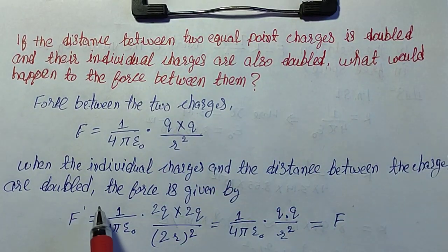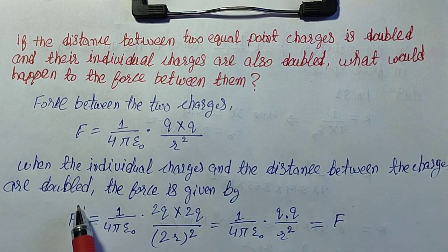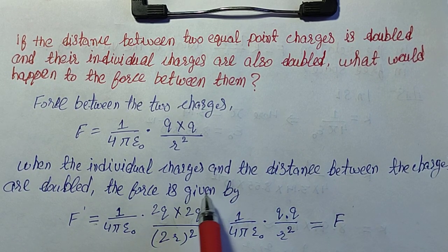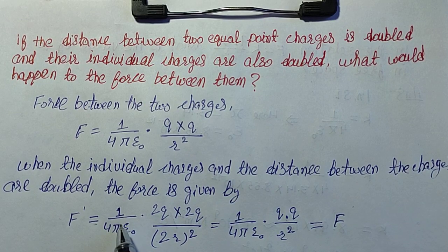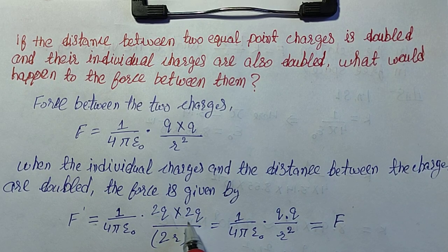When the individual charges and the distance between the charges are doubled, the force is given by F equals one by four pi epsilon naught into two q into two q over two r squared.